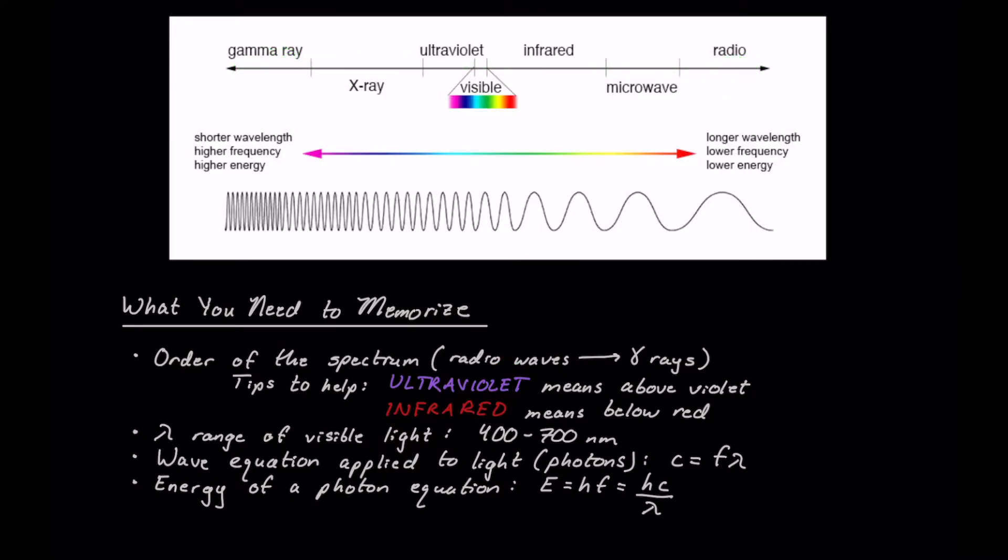That way you can go radio wave, microwave, infrared, and then ROYGBIV. Of course I've shown it backwards on this, but ROYGBIV, then ultraviolet, then x-ray, then gamma ray.